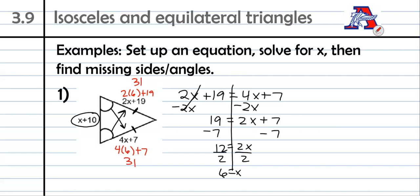And then we can also use that 6 right here. 6 plus 10 equals 16. So now we have all three of our missing sides, 16, 31, and 31.